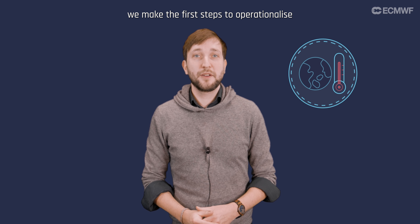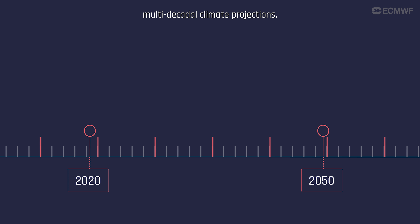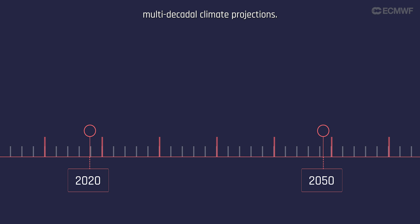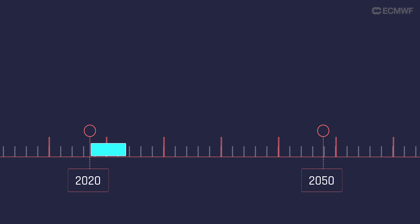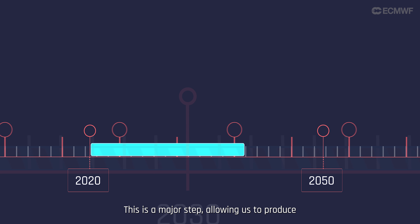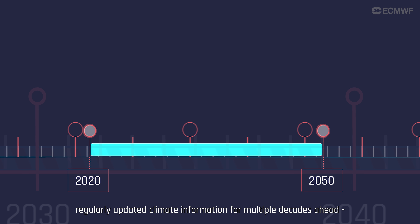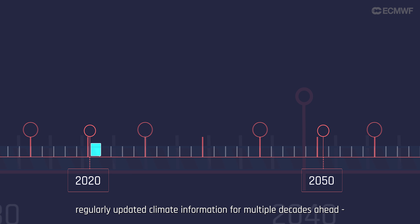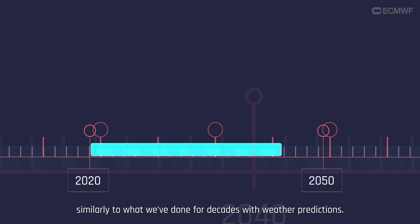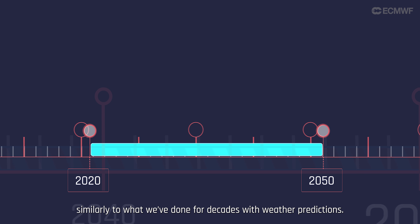With the climate change adaptation digital twin, we make the first steps to operationalize multi-decadal climate projections. This is a major step allowing us to produce regularly updated climate information for multiple decades ahead, similar to what we have done for decades for weather predictions.